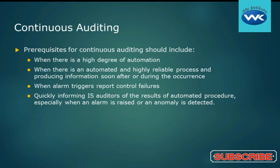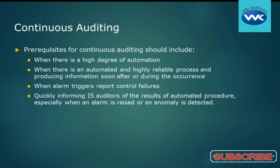If I'm watching a process and I've got continuous auditing on and an alarm triggers, then we can look at that. It also helps us quickly inform IS auditors of the results of automated procedures, especially when an alarm is raised or an anomaly is detected. Because auditing was already on when the event occurs, it allows us to look at that information and see the results. Think of it as having closed-circuit TV cameras guarding your front door — if you have it on, it's continuously monitoring. If somebody breaks in, hopefully you've got them on video. But it's too late to turn it on after the fact. That's the idea of continuous auditing.